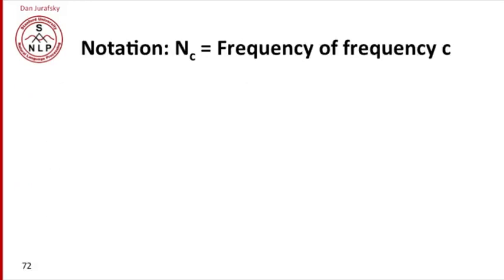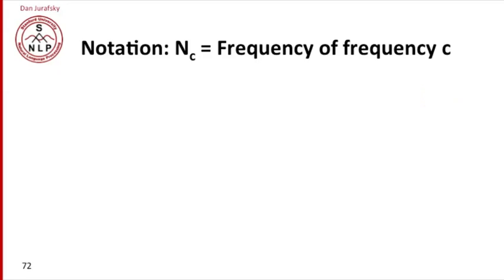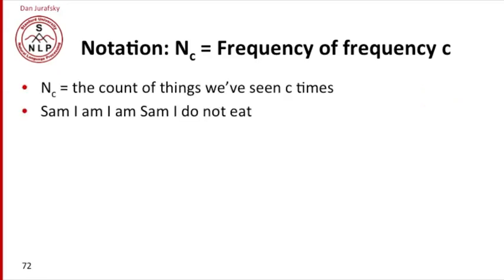To see how this intuition works, we introduce the notation N_C, meaning the frequency of frequency C — how many things occurred with frequency C? How big is the bin of things that occurred with frequency C? That's not very intuitive, so let's look at some examples.